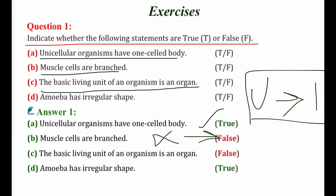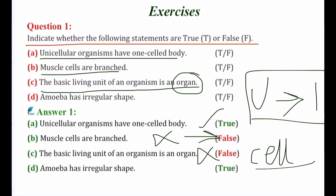Statement C: the basic living unit of an organism is an organ. We know that cell is the basic living unit of an organism, so the given statement is false. Cell is the correct answer because cell is the basic structural and functional unit of life, and all living things are composed of one or more cells — unicellular meaning single cell, and multicellular meaning many cells.